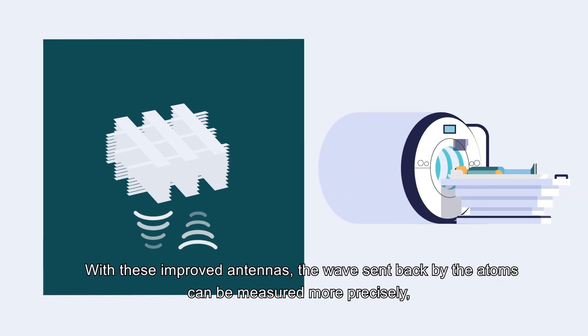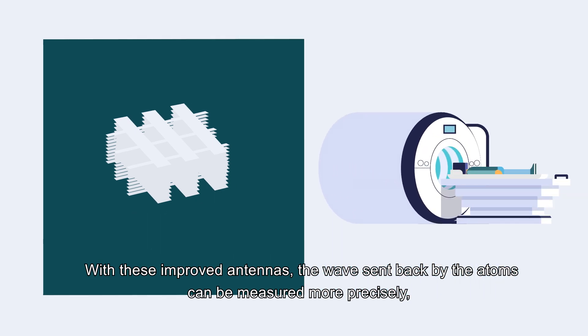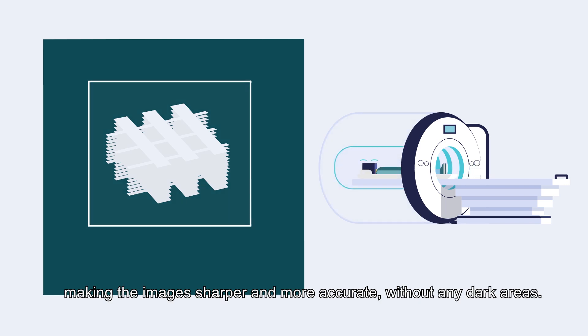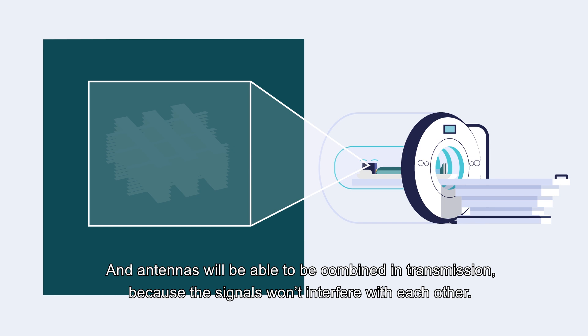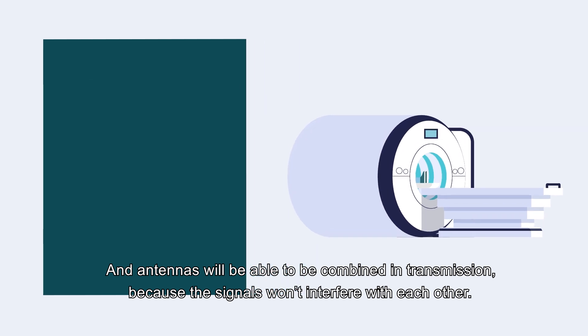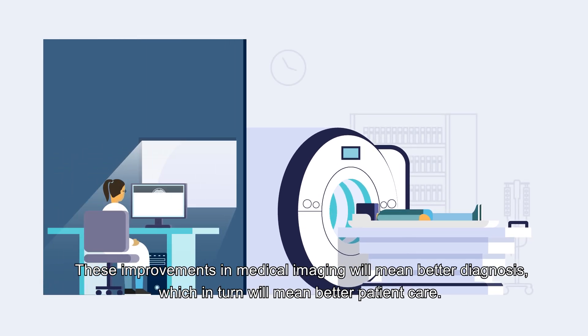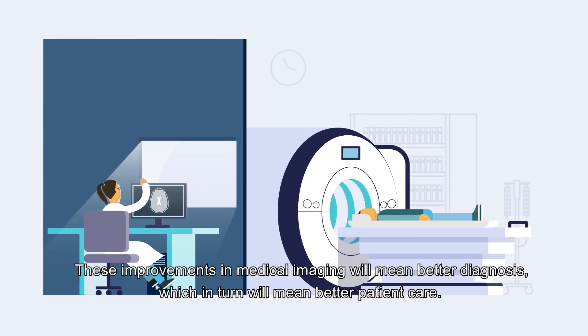With these improved antennas, the waves sent back by the atoms can be measured more precisely, making the images sharper and more accurate, without any dark areas. And antennas will be able to be combined in transmission because the signals won't interfere with each other. These improvements in medical imaging will mean better diagnosis, which in turn will mean better patient care.